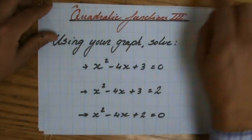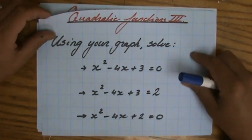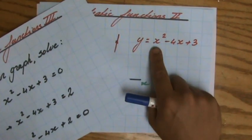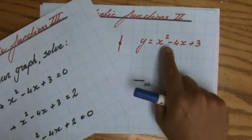Alright, well, let's start with the first one, x squared minus 4x plus 3 equals 0. And as you can see, that is the graph itself.